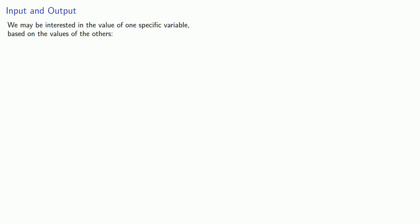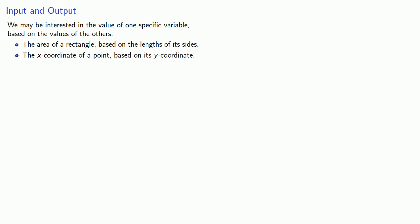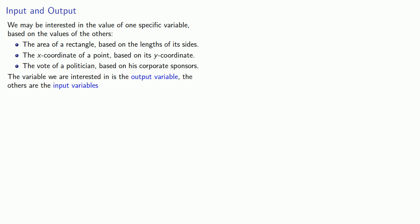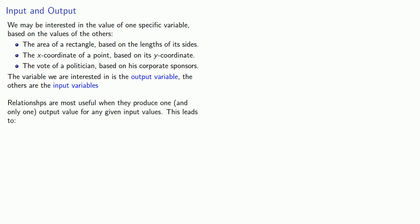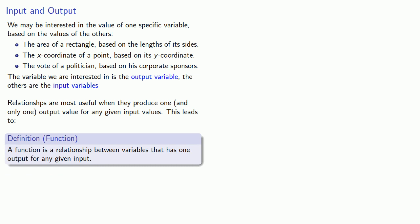Now we say that these quantities — like area, length, width, and corporate money — are all variable. But we may be interested in the value of one specific variable based on the values of the others. So we might want to know the area of the rectangle based on the length of its sides, or the x-coordinate of a point based on its y-coordinate, and we're almost certainly interested in knowing the vote of a politician based on his corporate sponsors. The variable we're interested in is called the output variable, and the others are the input variables. Relationships are most useful when they produce one and only one output for any given input values, and this leads to the idea of a function. A function is a relationship between variables that has one output for any given input.